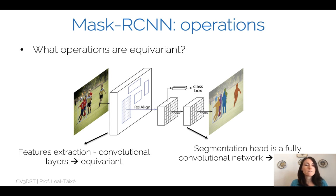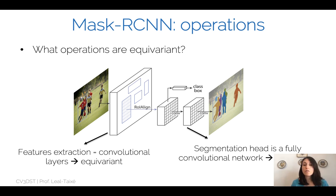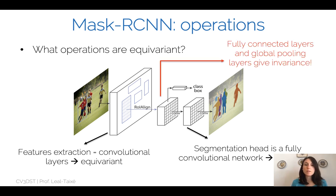What operations are inside Faster R-CNN, and which are equivariant and which are invariant? Feature extraction using convolutional layers is equivariant — no problem there. The segmentation head, being a fully convolutional network, is also equivariant. But there's a problem in the middle with Faster R-CNN: ROI pooling and the series of fully connected layers give invariance to the representation. These are operations we cannot keep for Mask R-CNN.